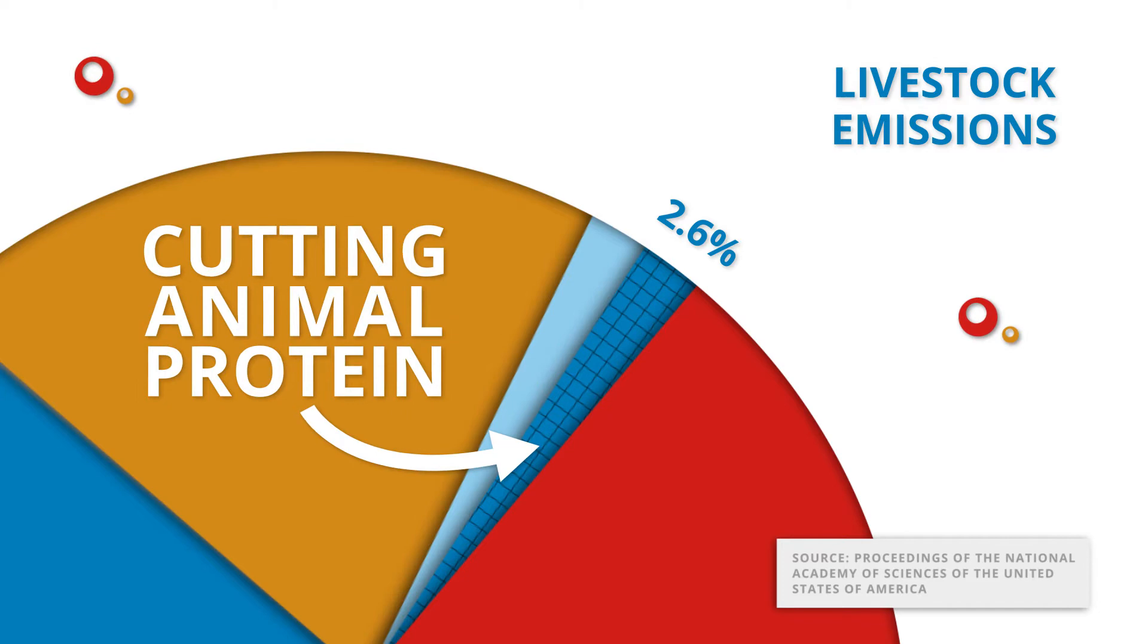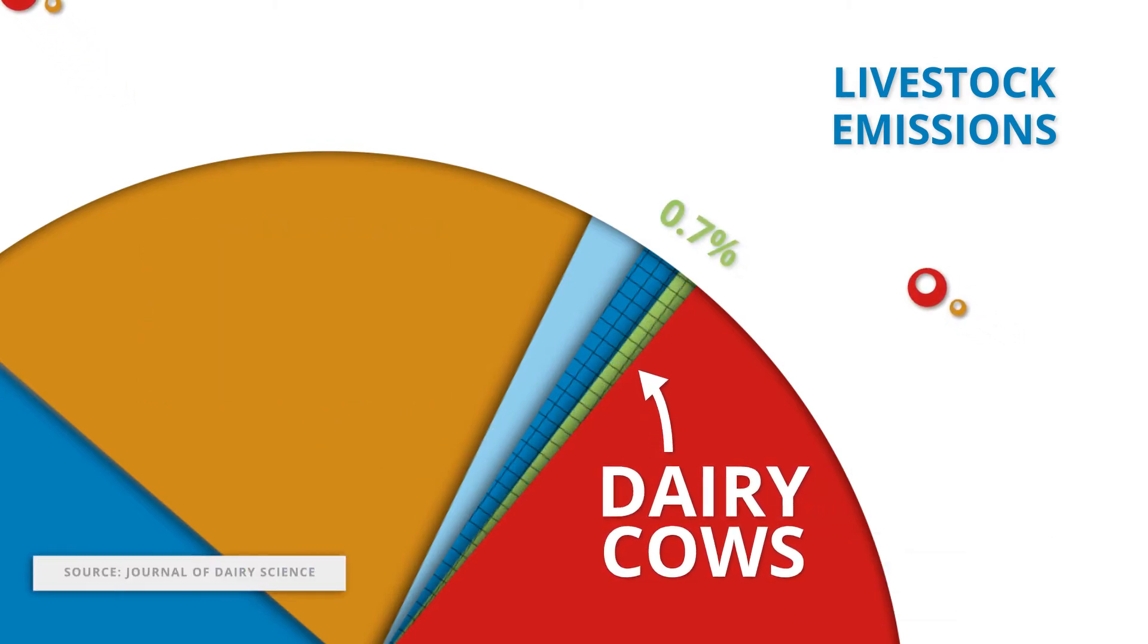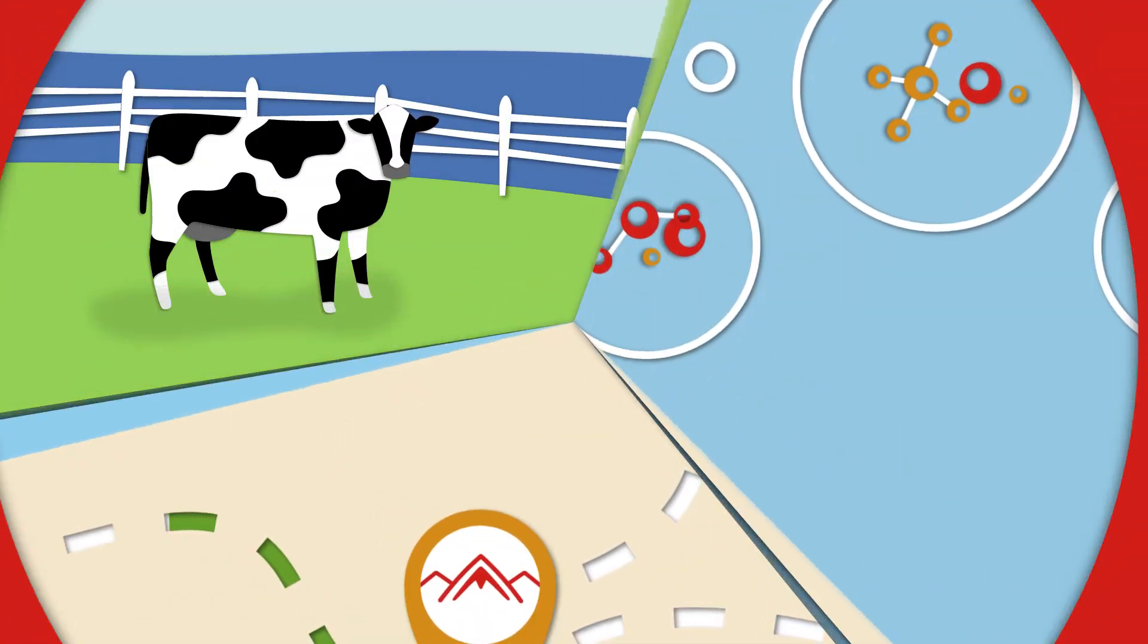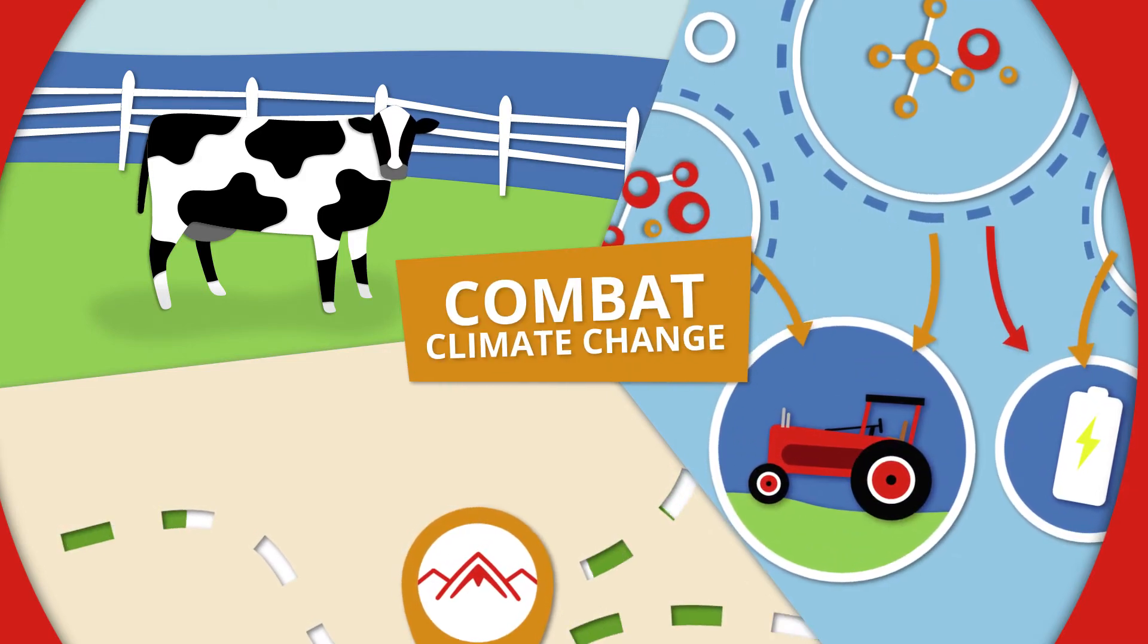And for dairy cows specifically, that number is even lower, a mere 0.7 percent. Still, farmers are taking advantage of new technologies to cut emissions on their farms and add to the nation's efforts to combat climate change.